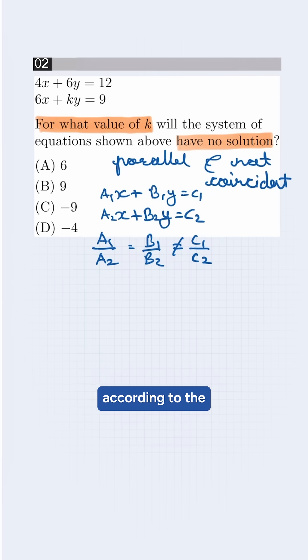Putting the values according to the system of equations given, it will be 4 by 6 equals 6 by k, which is not equal to 12 by 9.